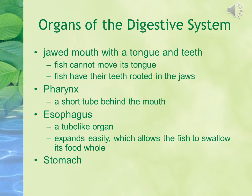Organs of the digestive system include a jawed mouth with a tongue and teeth, pharynx, esophagus, and stomach. The fish cannot move its tongue, and fish have their teeth rooted in the jaws. The pharynx is a short tube behind the mouth. The esophagus is a tube-like organ that expands easily, allowing the fish to swallow food whole.